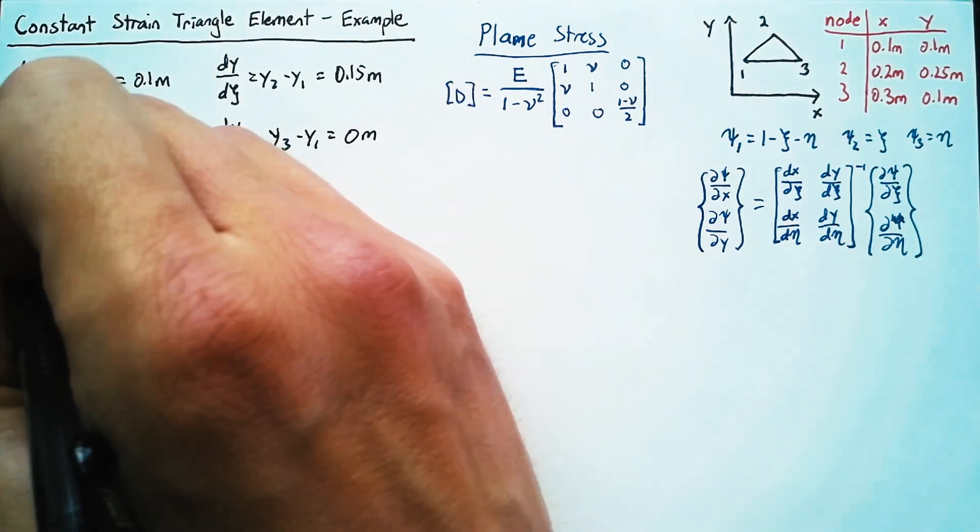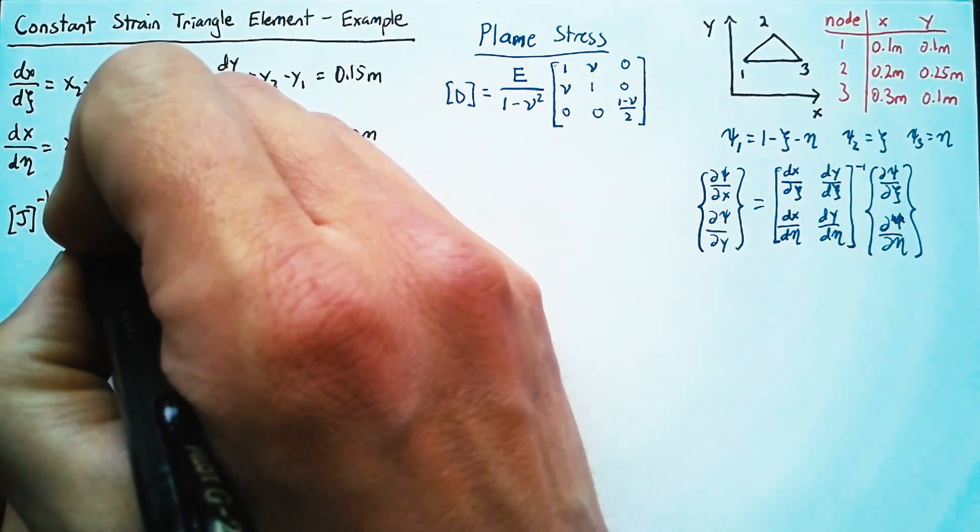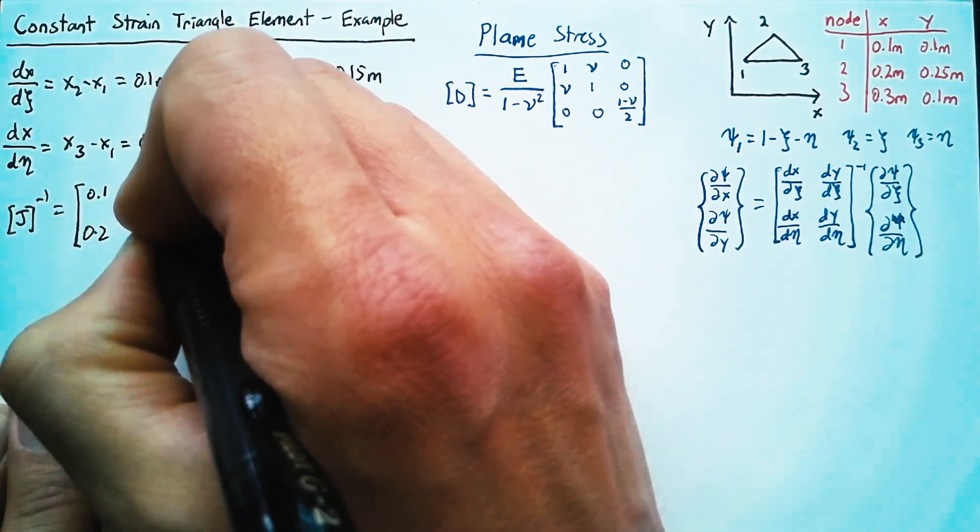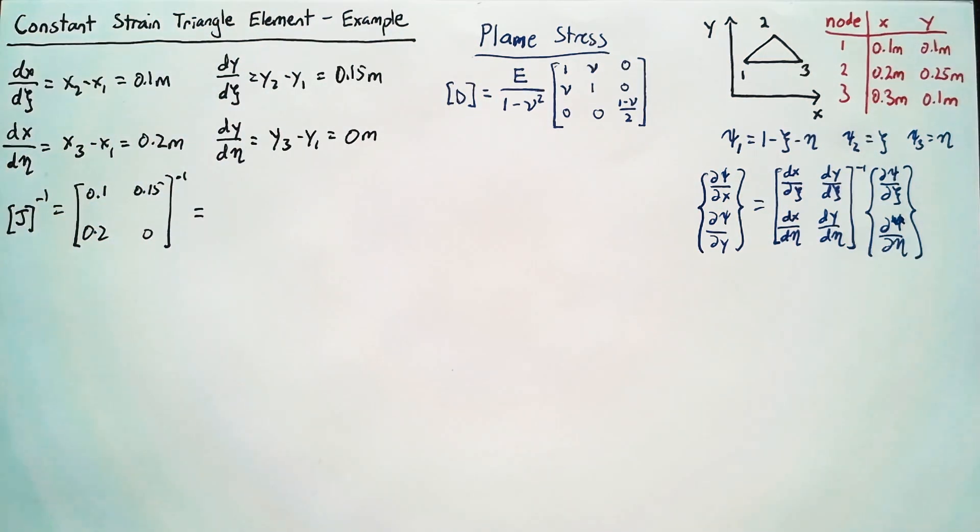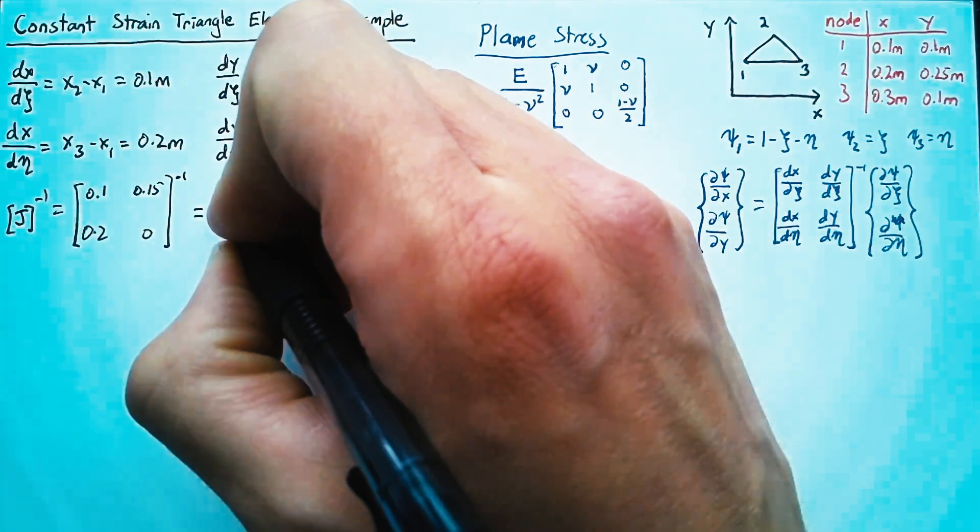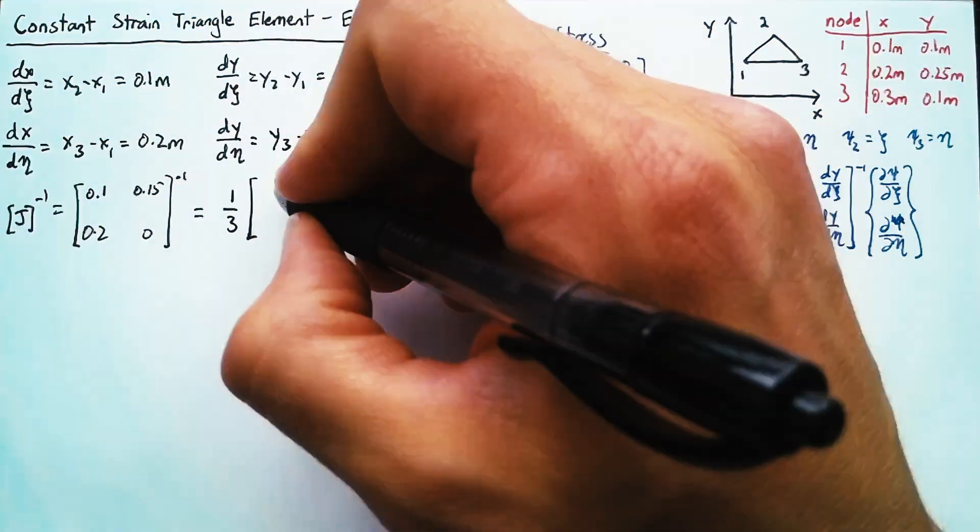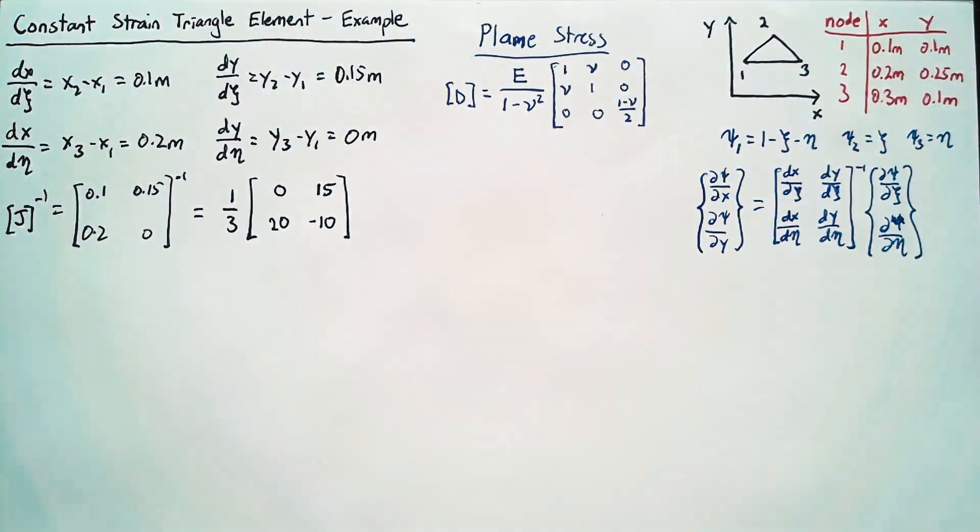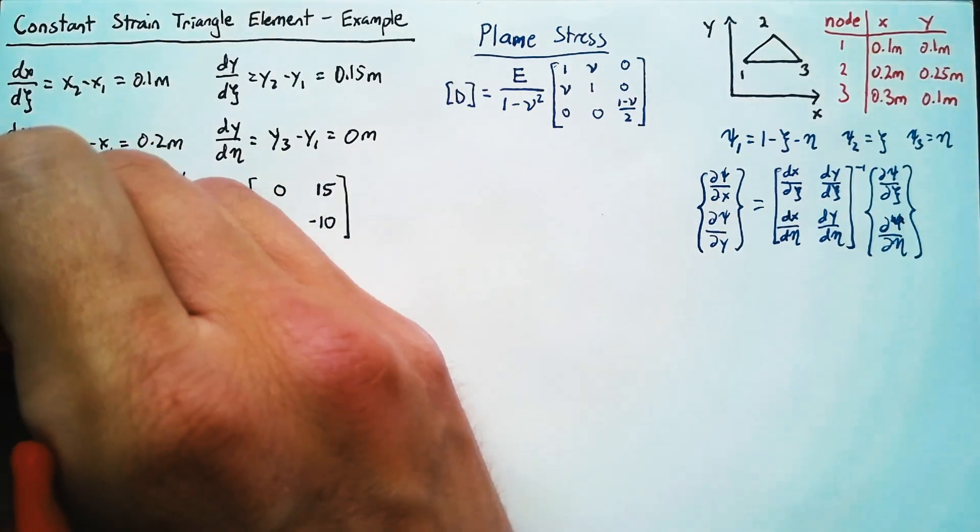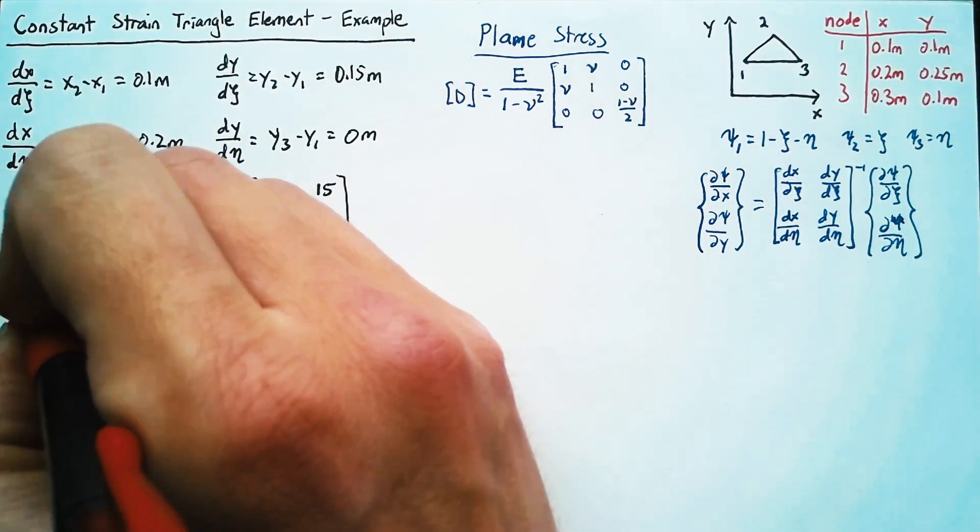So we can say that the inverse of the Jacobian matrix is equal to this 0.1, 0.2, 0.15, and 0 inverted. And we can find that without too much trouble but simply put that's just going to be one-third multiplied by 0, 15, 20, and negative 10.